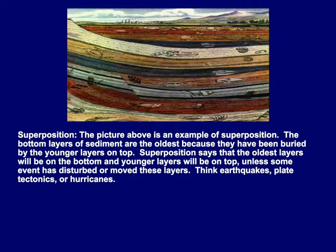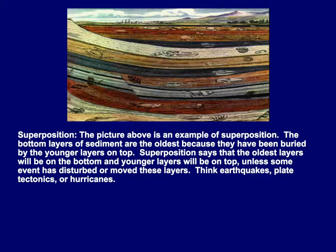Now, along with uniformitarianism, we have superposition. And as we can see, part of that word is position. The picture above is an example of superposition. The bottom layers of sediment are the oldest because they've been buried by the younger layers on top. Superposition says that the oldest layers will be at the bottom and younger layers will be on top, unless some event — maybe an earthquake, plate tectonics, or even hurricanes at the beach — unless something disturbs it, the oldest is on the bottom.